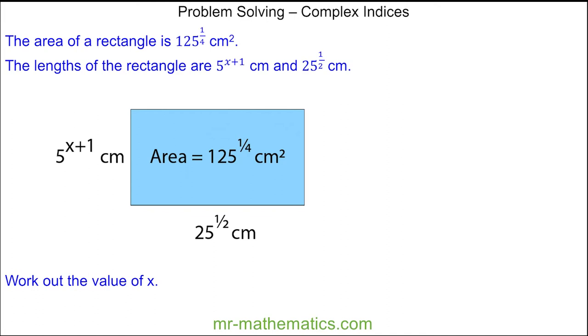In this question, we're going to combine the multiplication, division and power rule of indices. Given that the area of the rectangle is 125 to the power of one quarter, and this is equal to the length, which is 25 to the half, multiplied by the width, which is 5 to the power of x plus 1.